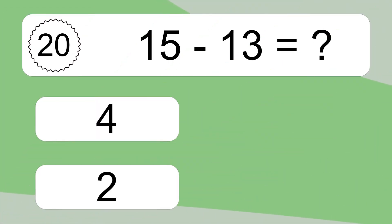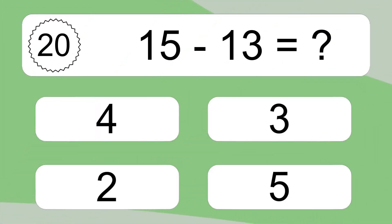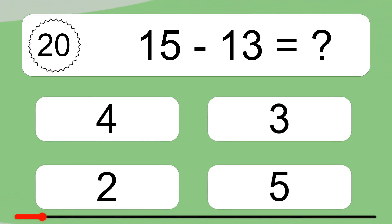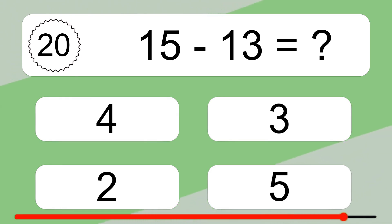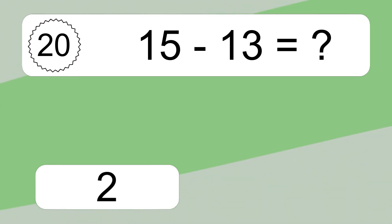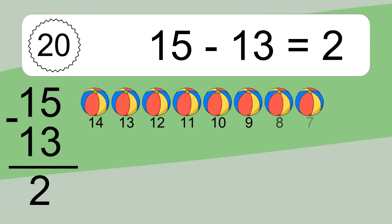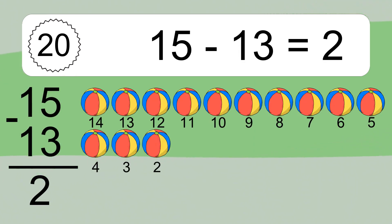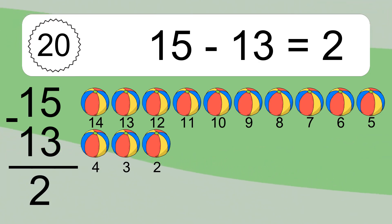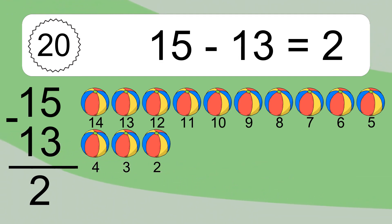15 minus 13 equals what? 15 minus 13 equals 2. Let's count it: 14, 13, 12, 11, 10, 9, 8, 7, 6, 5, 4, 3, 2.